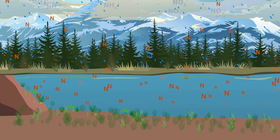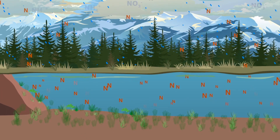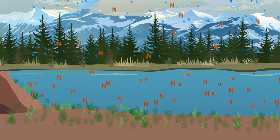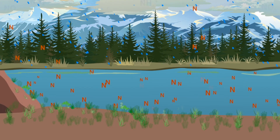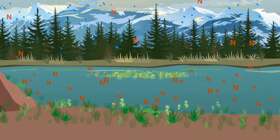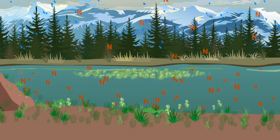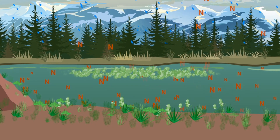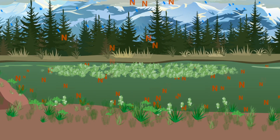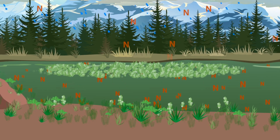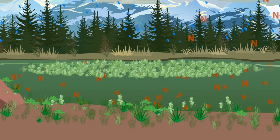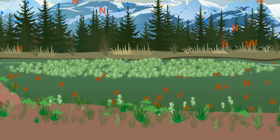At first, there are just minor shifts in species composition. As excess nitrogen increases, algae growth becomes excessive, leading to a decline in water clarity, damage to habitat and food resources, and a deficiency of oxygen for fish and other aquatic life.